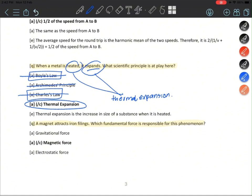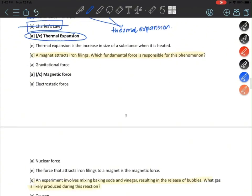Moving on. A magnet attracts iron filings. Which fundamental force is responsible for this phenomenon? This is also quite straightforward - it's magnetic force.